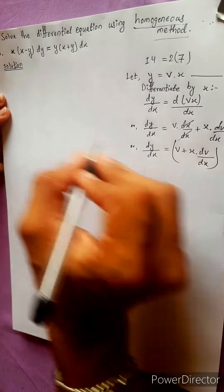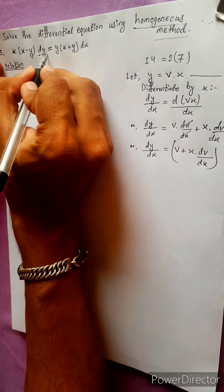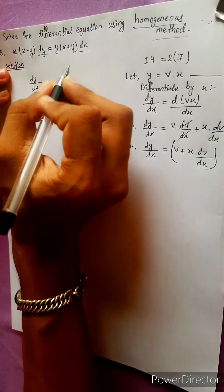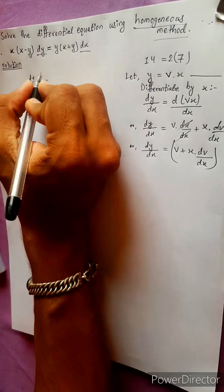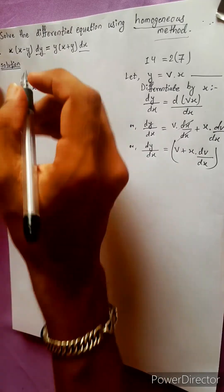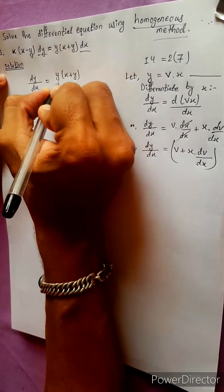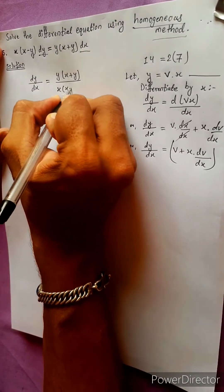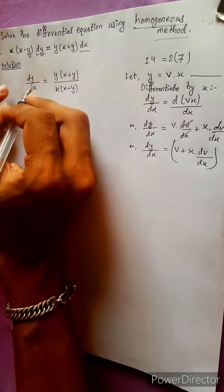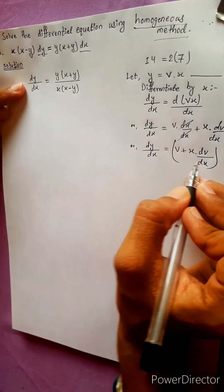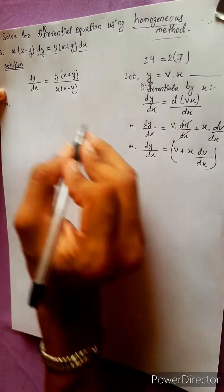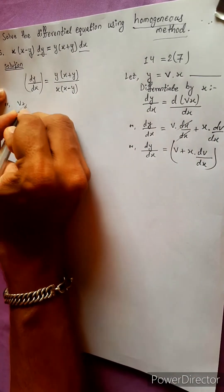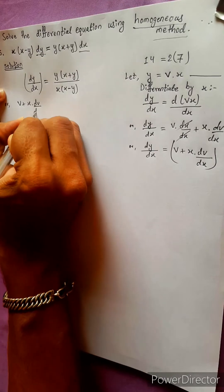Now substituting back, dy/dx equals v plus x dv/dx. Cross multiplying, we get dy/dx equals (x plus y) divided by (x minus y). Substituting y equals vx, dy/dx equals v plus x dv/dx.